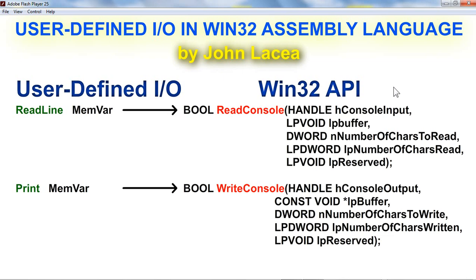Thus, programming languages such as C, C++, Visual Basic, Java, C Sharp, and Assembly Languages, to name a few, can call this Win32 library. In Win32 assembly language, to issue an input command, we call the Win32 API Read Console function. To issue an output command, we call the Win32 API Write Console function. I use macros to simplify the system calls. Thus, the print macro calls the Write Console function, and the readline macro calls the Read Console function.